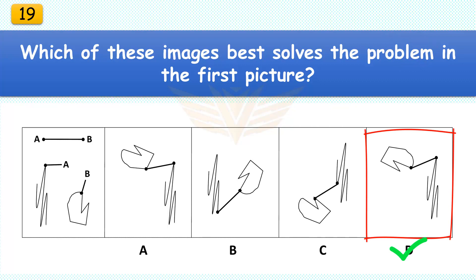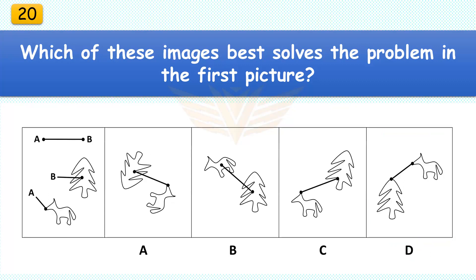Which of these images best solves the problem in the first picture? The correct answer is D. Leave the scribble as is, but rotate the mitten greater than 90 degrees.